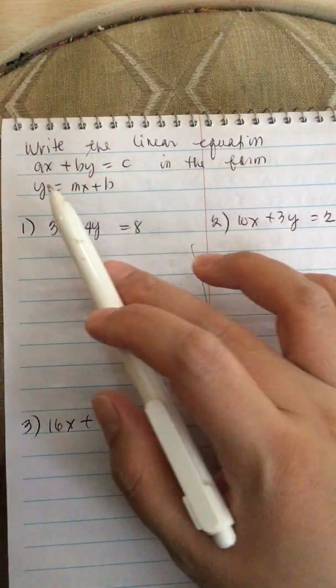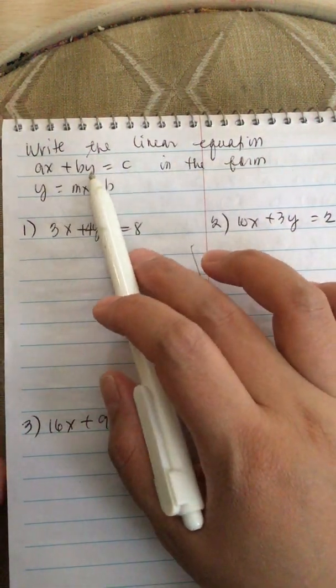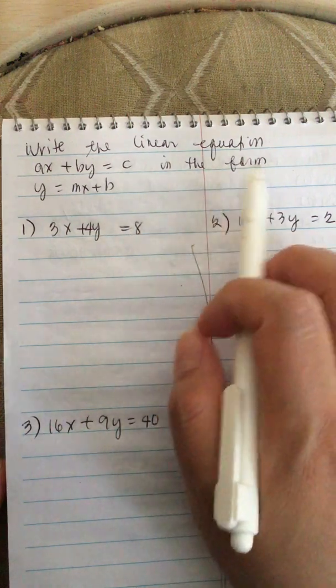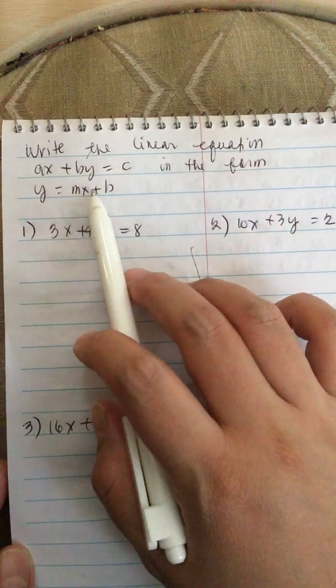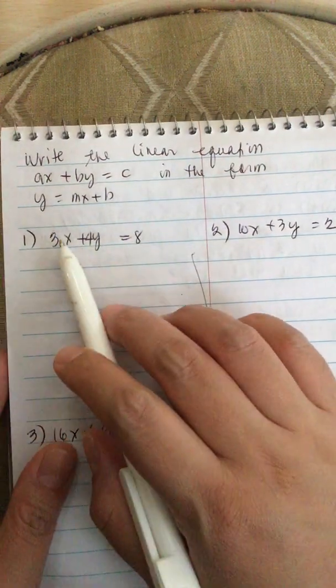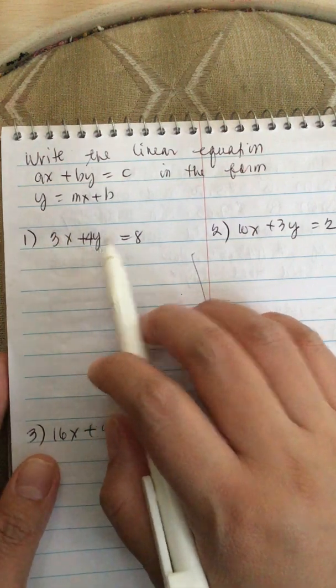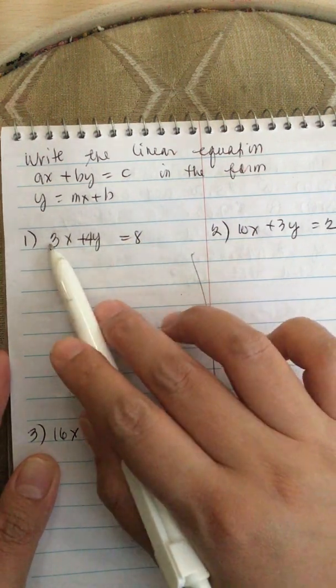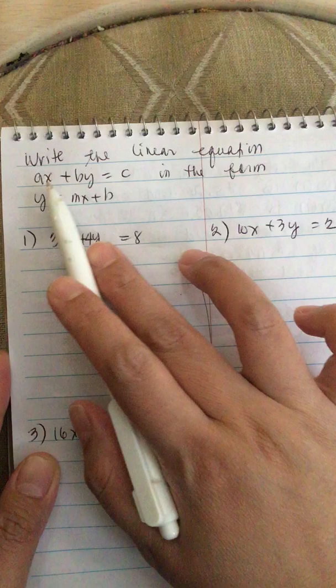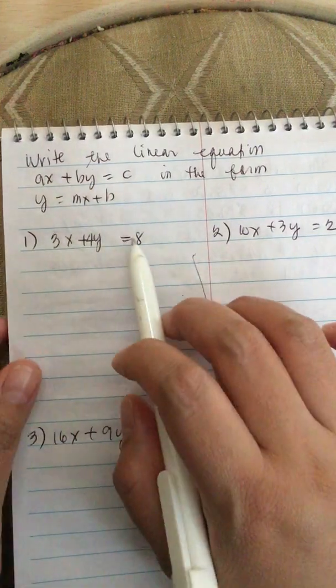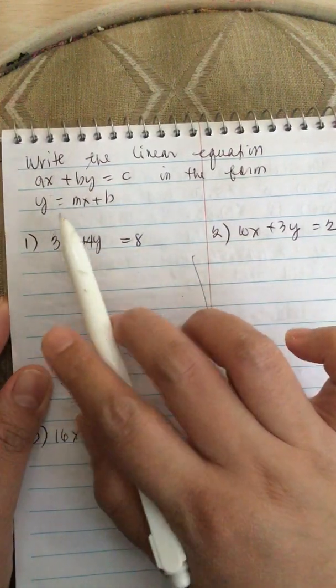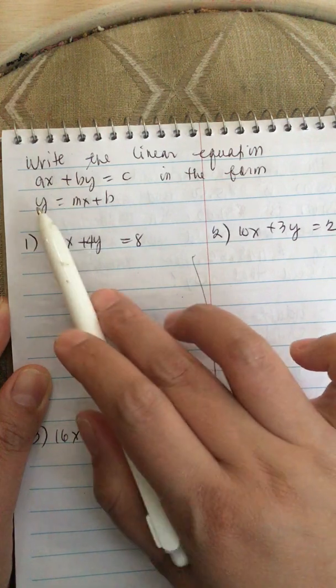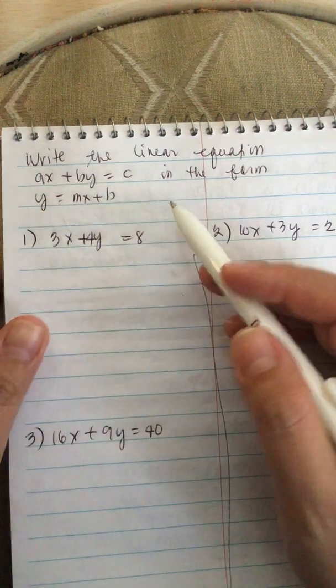Write the linear equation AX plus BY equals C in the form Y equals MX plus B. So we have 3X plus 4Y equals 8. This is in the form AX plus BY equals C. Now we want to write it in Y equals MX plus B form.